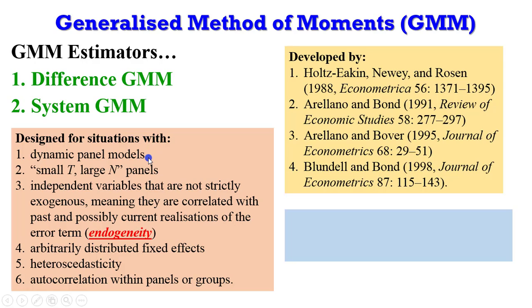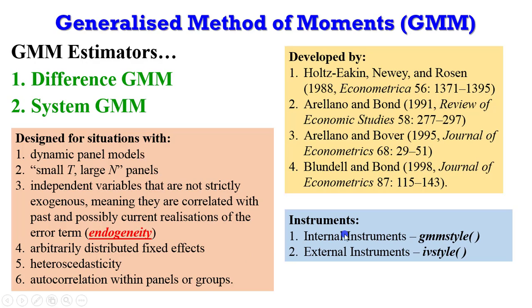GMM is designed for situations where you have a dynamic panel model with small T and large N, where the independent variables are not strictly exogenous — that is, they are correlated with the error term, meaning there is endogeneity in your model. GMM is also designed for cases where you have arbitrarily distributed fixed effects, heteroscedasticity, or autocorrelation.